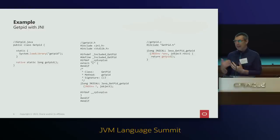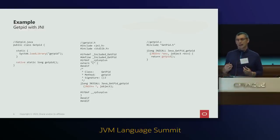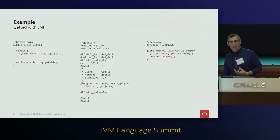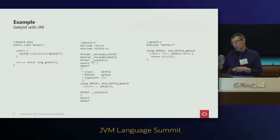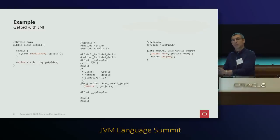Translating that into code, there is a lot of mechanical code and many artifacts that can go out of sync. If the underlying library changes, you need to regenerate the header file and tweak your C implementation. All these things are very difficult to maintain and are a problem to deploy, especially if you are releasing a Java library with native dependencies.